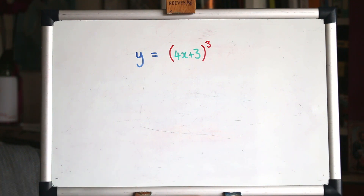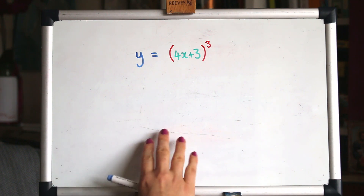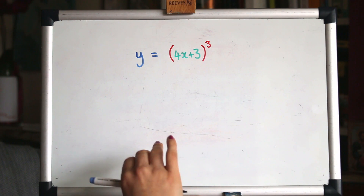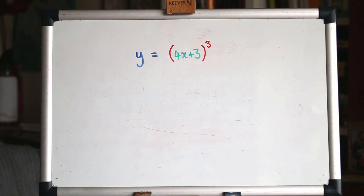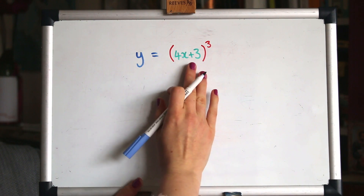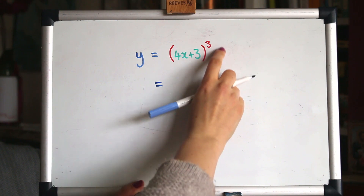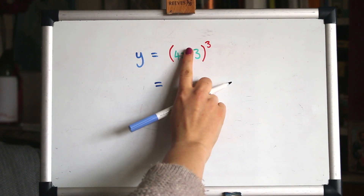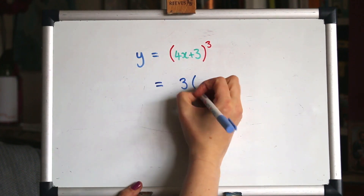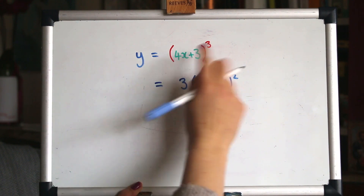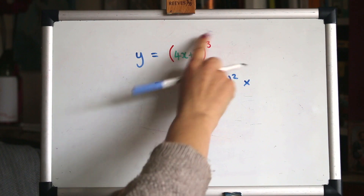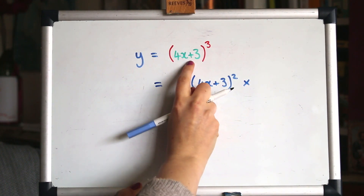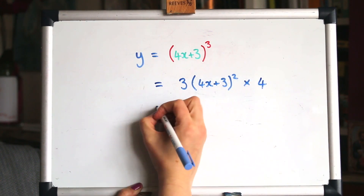This quicker method isn't a different method — it's just a different way of thinking about it. Remember: dy/dx equals du/dx times dy/du, so it's the derivative of the outer function times the derivative of the inner function. What we're going to do is differentiate the outer function first — if you put a finger over the inner function, you've got something cubed, so when you differentiate that you get three times that something squared. Then we multiply by the derivative of the inner function, 4x plus 3, which gives 4.